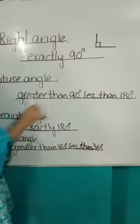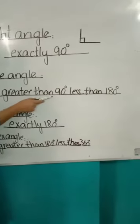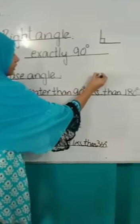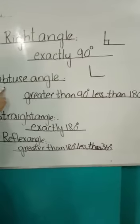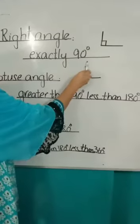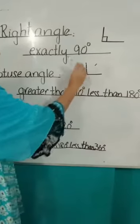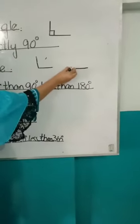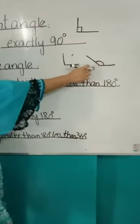Obtuse angle is the angle which is greater than 90 degrees but less than 180 degrees. The 90 degree angle is right here, and obtuse angle is greater than 90 degrees. The smaller angle is called acute, and the greater angle is obtuse. We draw here obtuse angle, greater than 90 degrees — the shape of obtuse angle lies there.